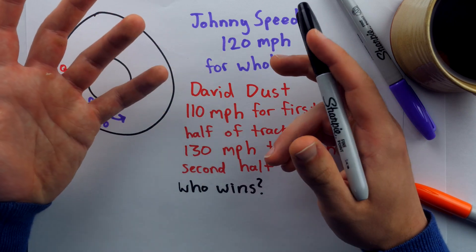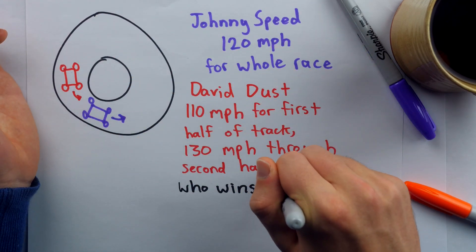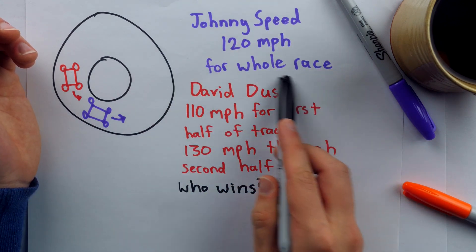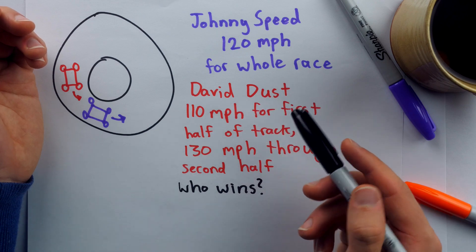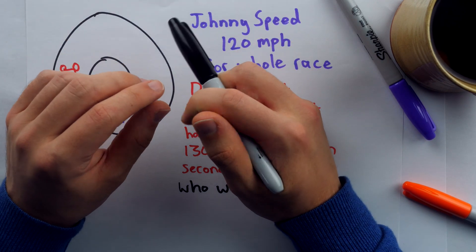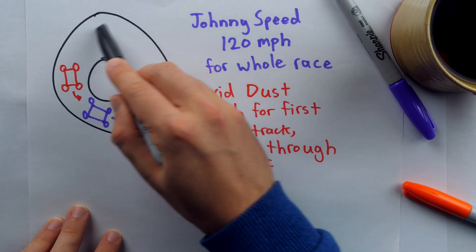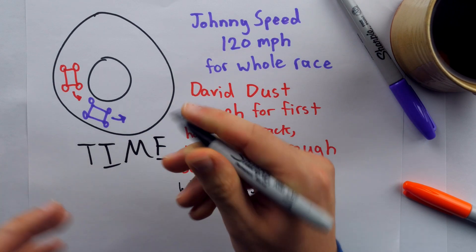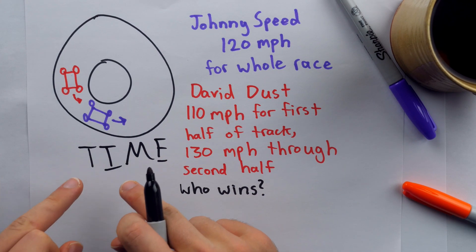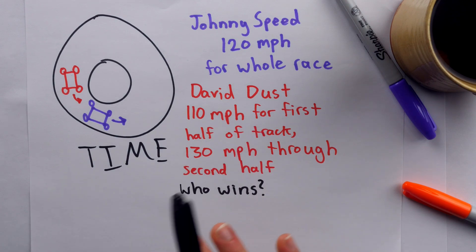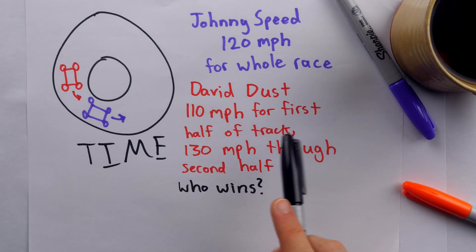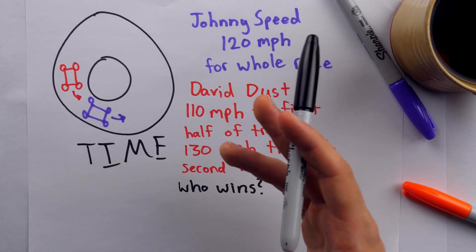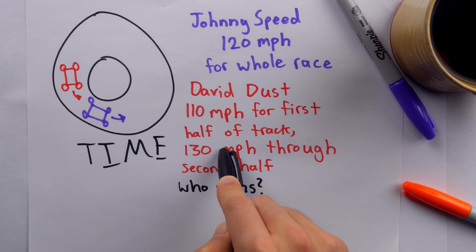that is a misunderstanding of what's actually important here. It's true that their average speeds over the fixed distance of the track are the same. Johnny Speed's going 120 miles per hour for the whole track. David Dust is going 110 for one half of the track, and 130 for the other half of the track. But this is a race. It's not necessarily the track distance that is important, so much as it is time, and who finishes in the lesser amount of time. That's what's most important. So it's not really an accurate interpretation to weigh the 110 miles per hour and the 130 miles per hour of David Dust equally. You'd have to weigh them equally to say his average speed is 120.